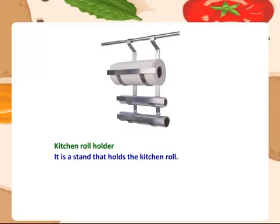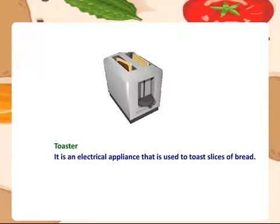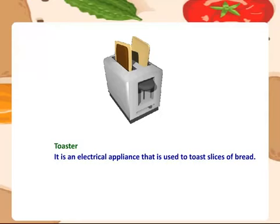Kitchen roll holder — it is a stand that holds the kitchen roll. Toaster — it is an electrical appliance that is used to toast slices of bread.